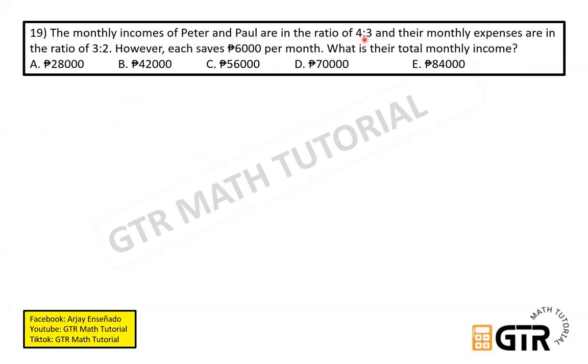The monthly incomes of Peter and Paul are in the ratio 4 is to 3. This 4 and 3 are multiplied by the same number. We can use x as the constant of variation for this 4 is to 3. Multiply 4 and 3 by the same number x. We don't know the number so we use x. And their monthly expenses are in the ratio of 3 is to 2.